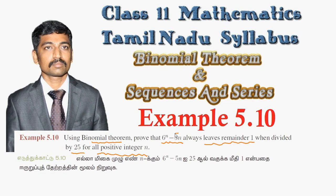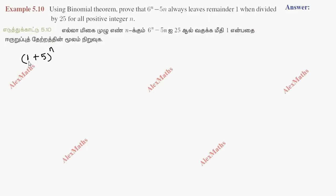If you see the step in the middle of the row, you can see that it is easy to follow. The first step is to write 6 power n as 1 plus 5, whole power n. This step is easy to solve using the usual expansion formula for 1 plus 5 whole power n.